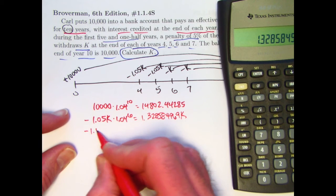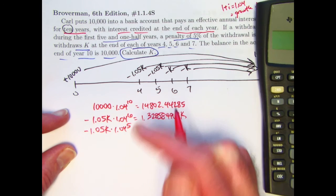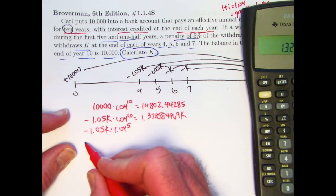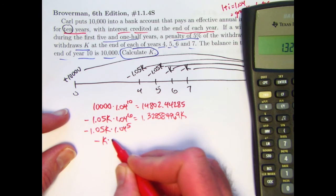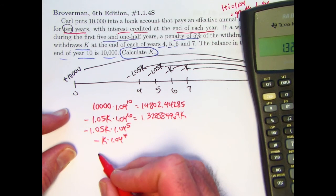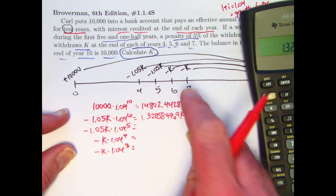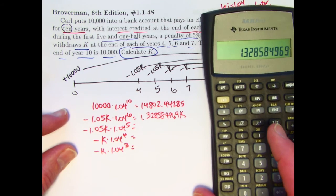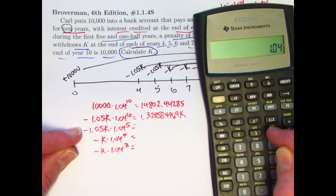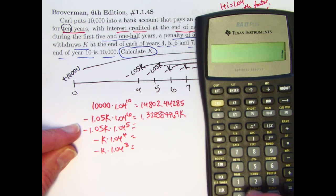Same kind of thing for the other ones. 1.05K times 1.04 to the fifth power for this withdrawal at time five with the penalty. Push that forward five years to time 10. There would also be a negative K times 1.04 to the fourth for this one. At time six, it has no penalty. And a negative K times 1.04 to the third for the one at time seven. All right, let's go ahead and find these things out now.